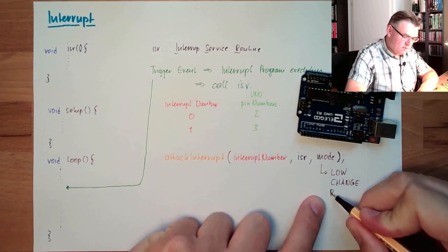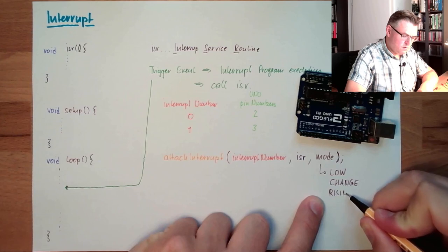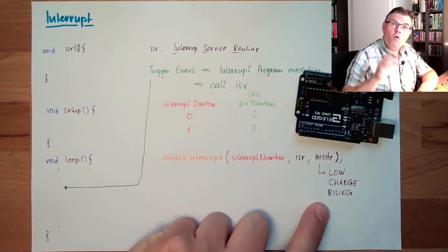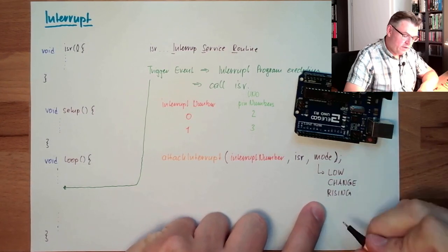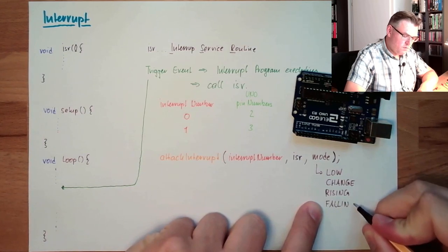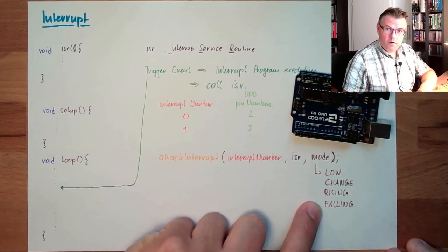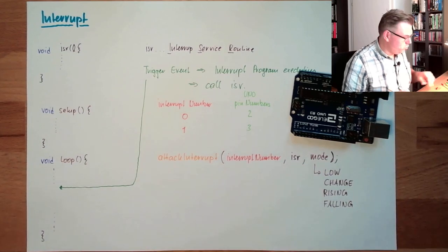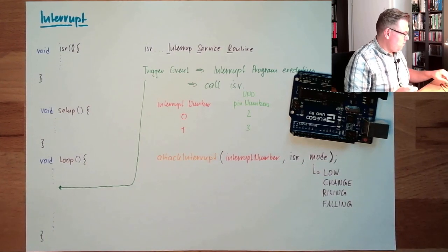If we only want to trigger it by a rising edge, we can write RISING. Or if we want to trigger it with a falling edge, we write FALLING. These are the possible modes.